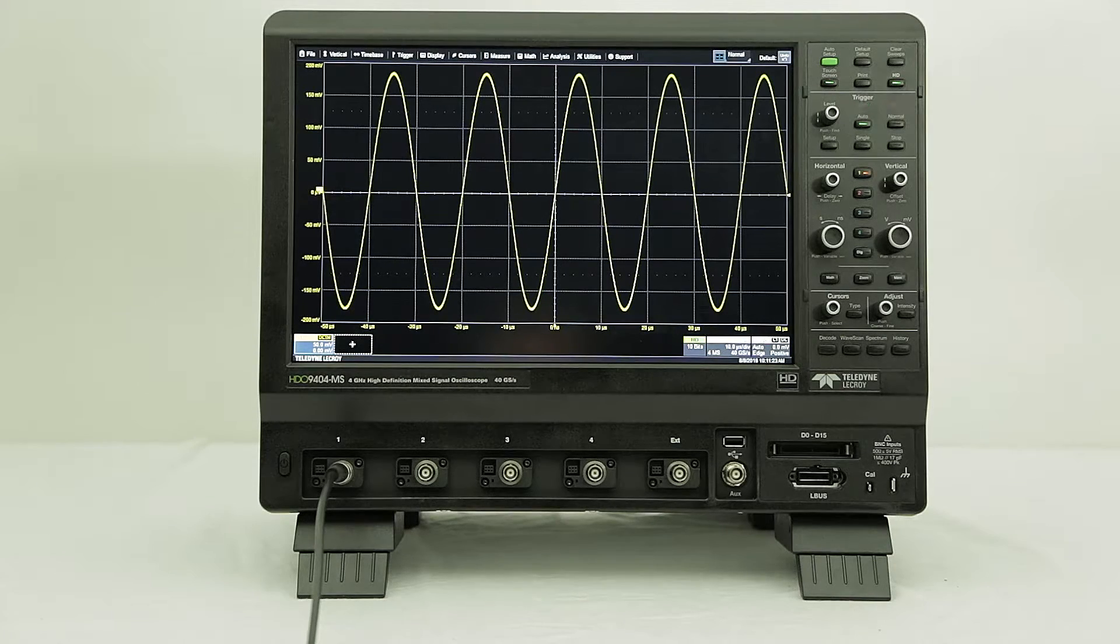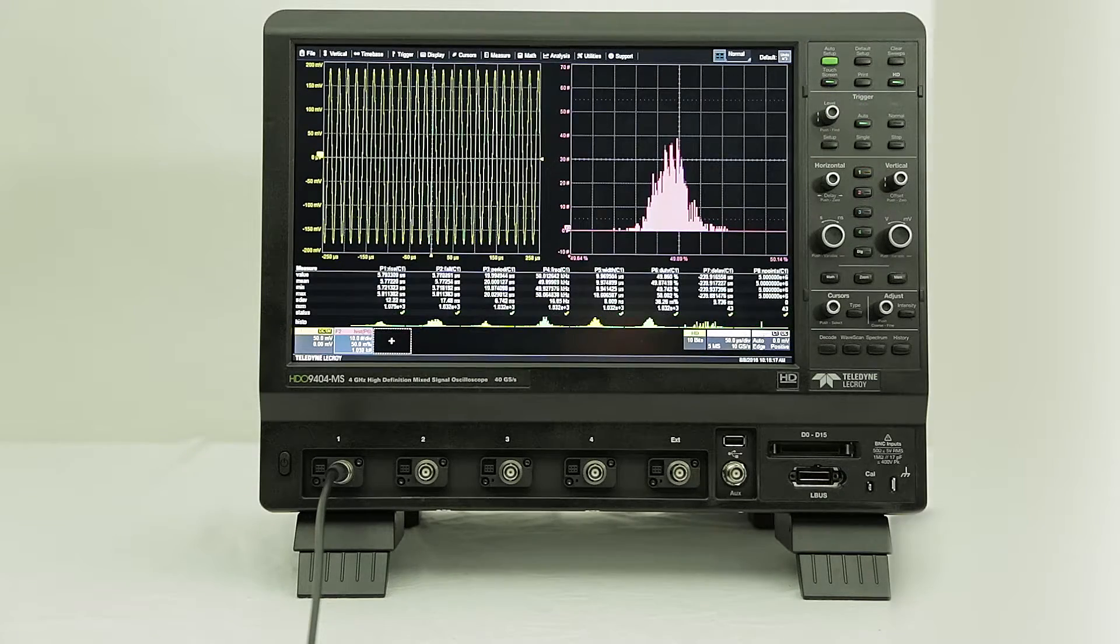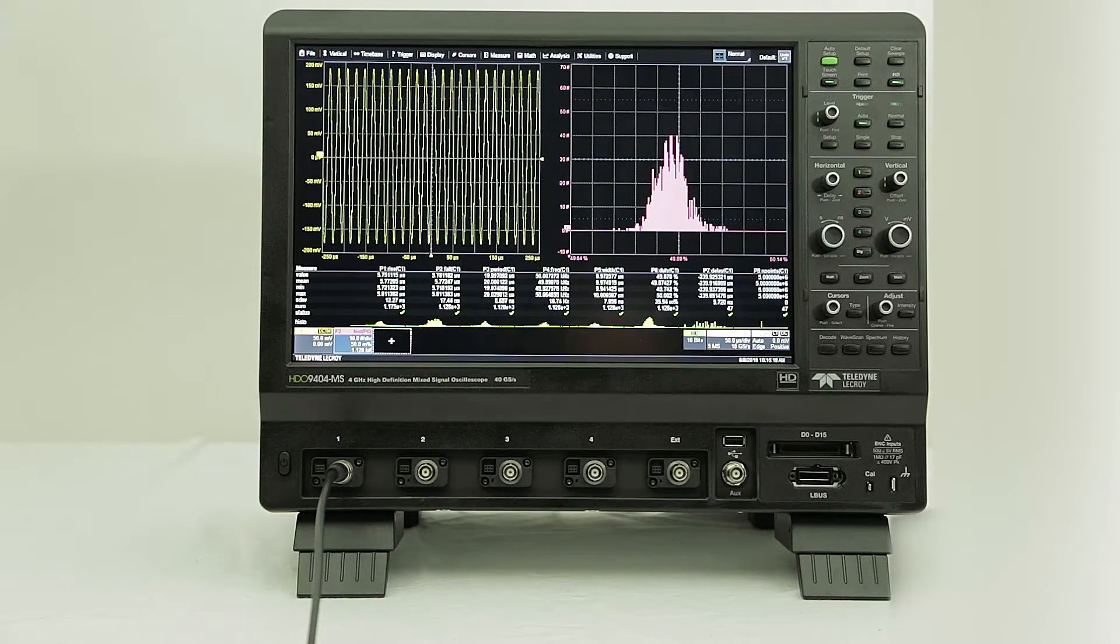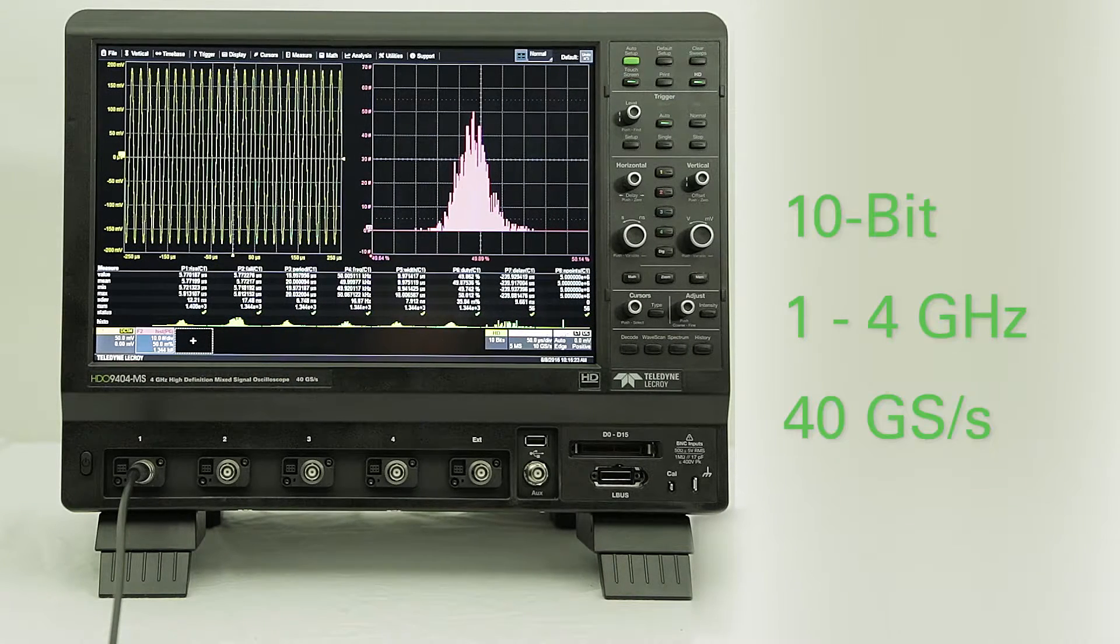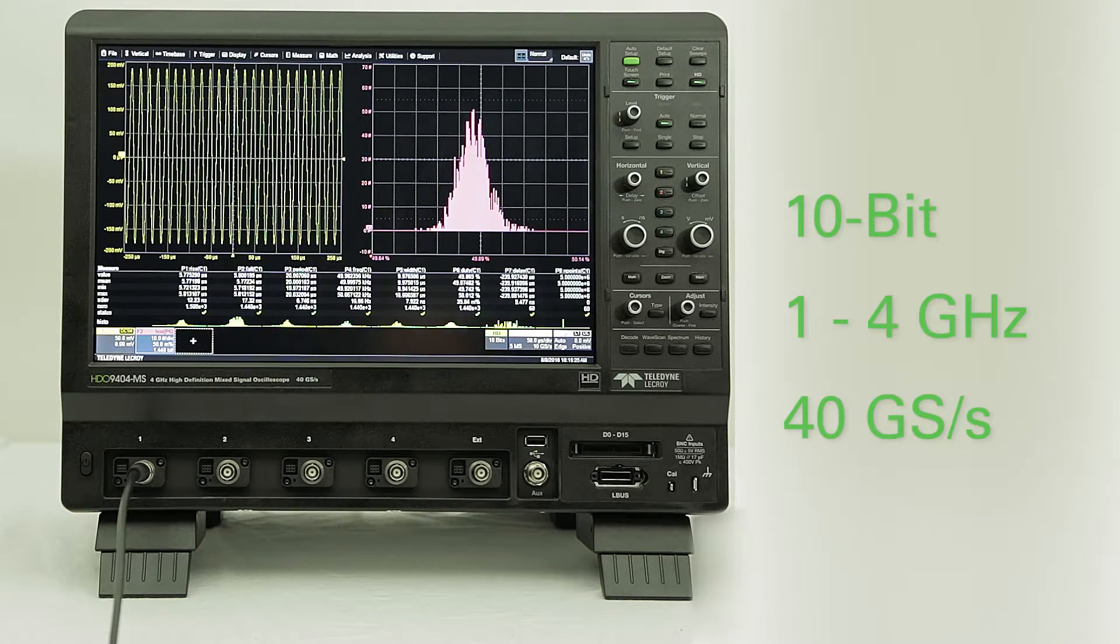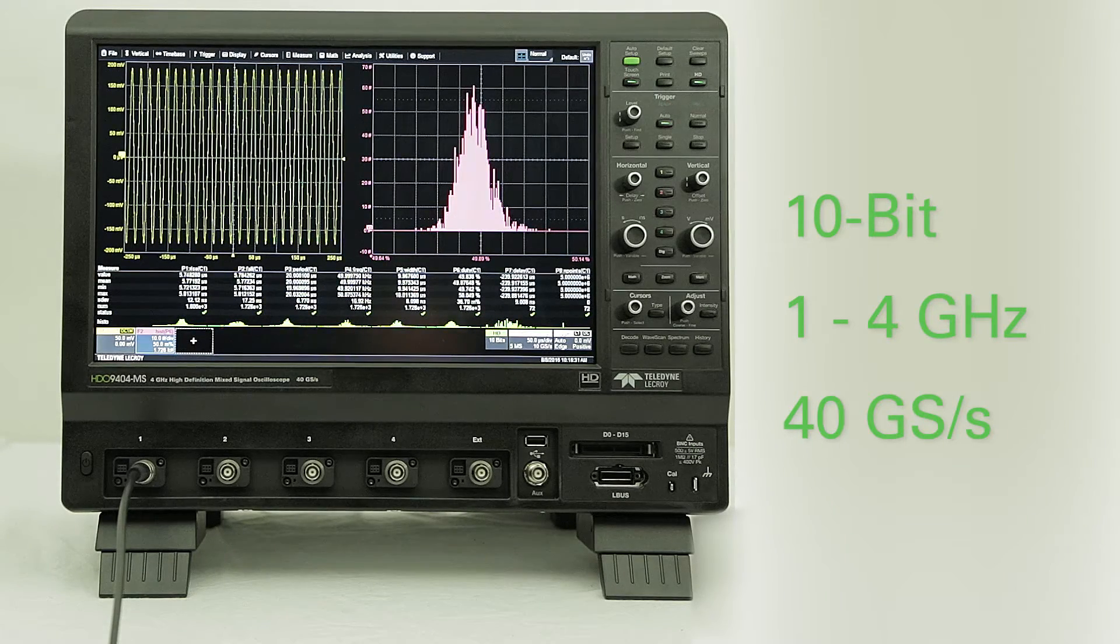The HDO9000 series is Teledyne LeCroy's latest addition to the high-definition oscilloscope family. HDO9000 high-definition oscilloscopes offer 10-bit resolution with bandwidths from 1 GHz to 4 GHz, a high sample rate of 40 gigasamples per second, and a deep, powerful toolbox to facilitate debug in high definition.